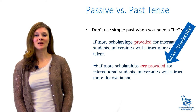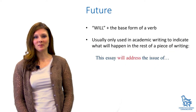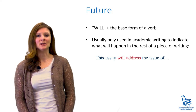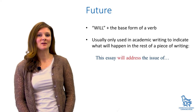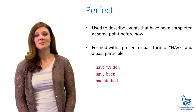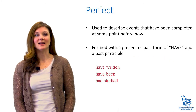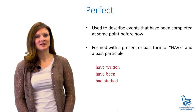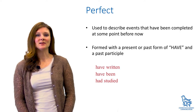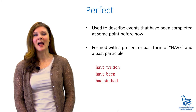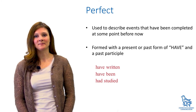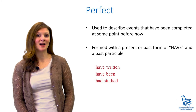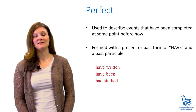The simplest way to express future time in English is to use will plus the base form of a verb. In academic writing, it is usually only used to indicate what will happen in the rest of a piece of writing. The perfect tenses are also used to describe events that have been completed at some point before now but that aren't anchored to a specific time. They are formed by using a present or past form of the verb have and a past participle. Remember that regular verbs have past participles that are the same as the past tense, whereas irregular verbs have different forms.